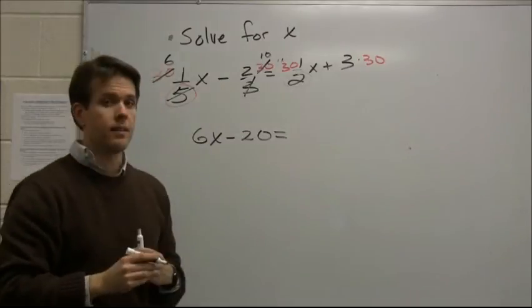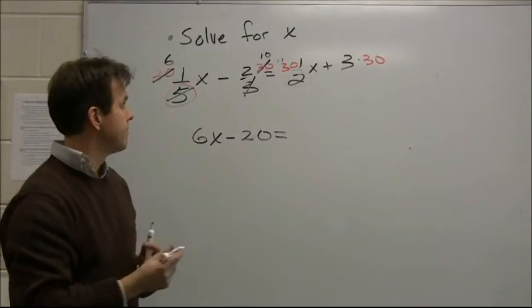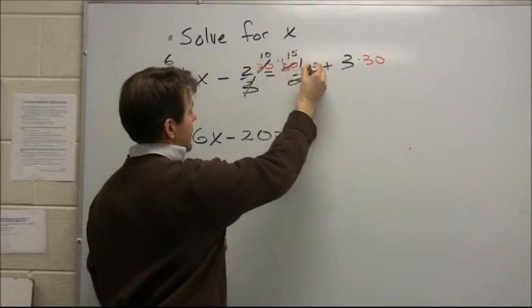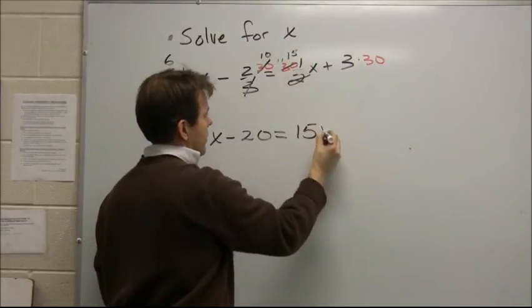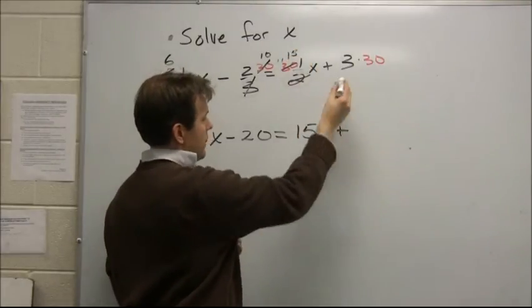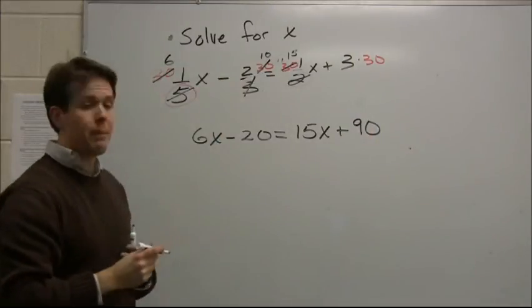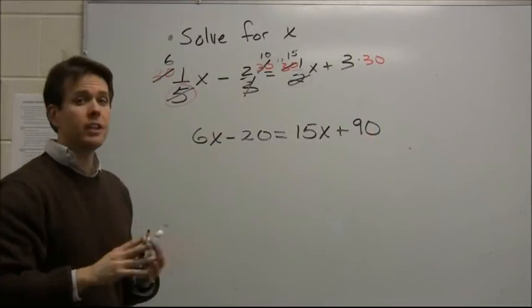Equals, see if you can do this right-hand side. Okay, two goes into 30 fifteen times, 15 times one x is 15x, plus three times 30, which is 90. Not too bad. We get rid of the fractions anyway.